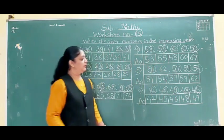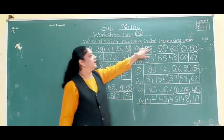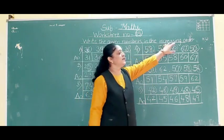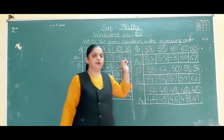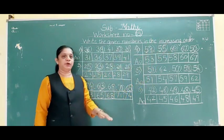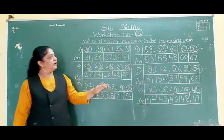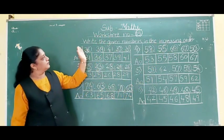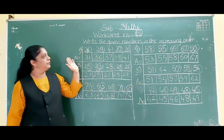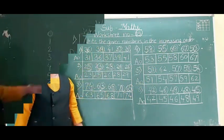Understood? Ascending order means increasing order. Ascending order means small to big.